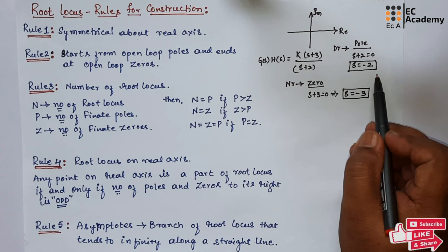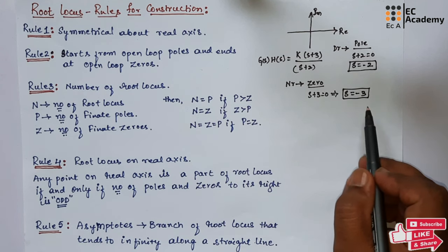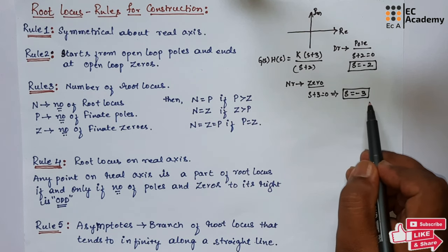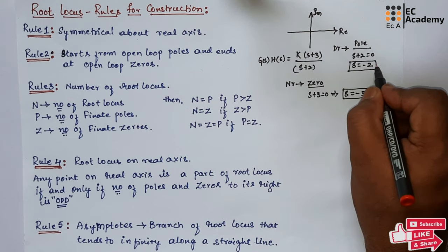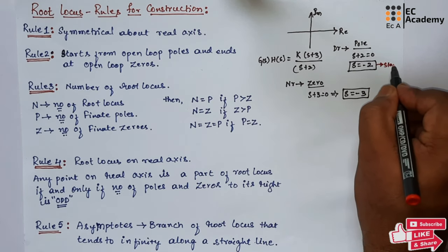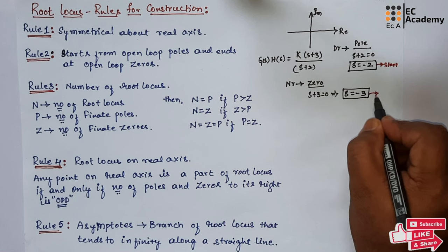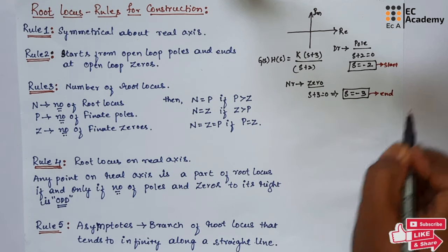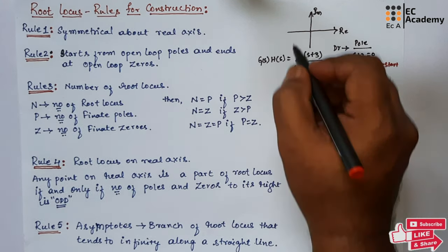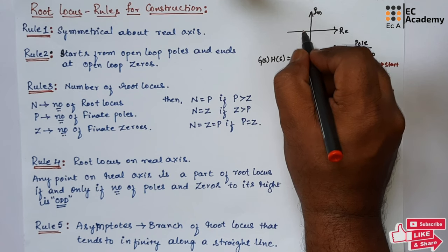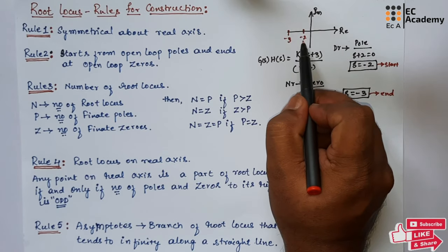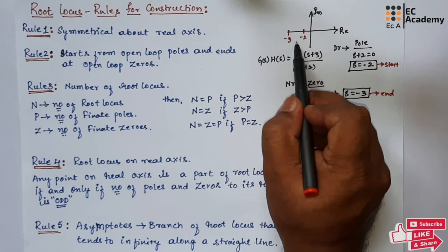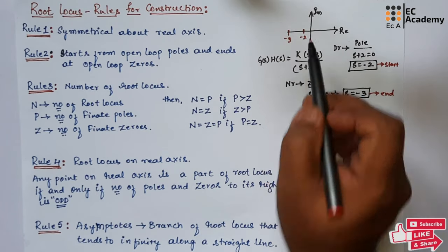From Rule 2, the root locus starts from the open-loop pole and ends at the open-loop zero. So if we take the real axis, here it is minus 2 and here it will be minus 3. This is the starting point of the root locus and this is the end point.